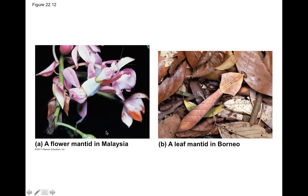For example, here are two species of mantids, or praying mantises. This one is a flower mantid found in Malaysia; this one is a leaf mantid found in Borneo. They share common ancestry — we have praying mantises around here that tend to be relatively small and greenish. These mantids are extreme examples of blending in with their environment. This leaf mantid looks an awful lot like just another leaf on the ground, and if a photographer hadn't taken this picture, you might not have seen it.